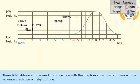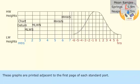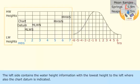These tide tables are to be used in conjunction with the graph as shown, which gives a more accurate prediction of height of tides. These graphs are printed adjacent to the first page of each standard port. The left side contains the water height information with the lowest heights to the left, where also the chart datum is indicated.